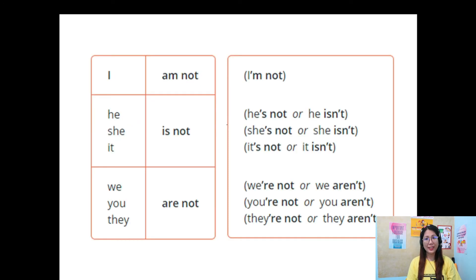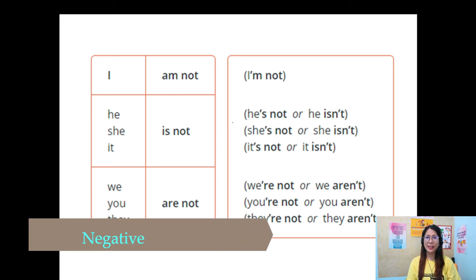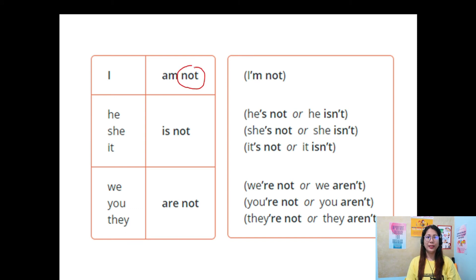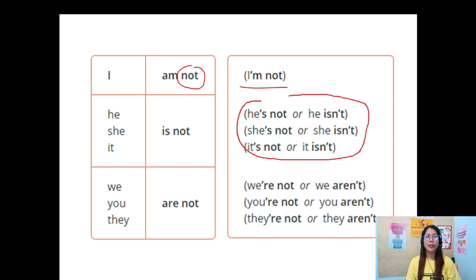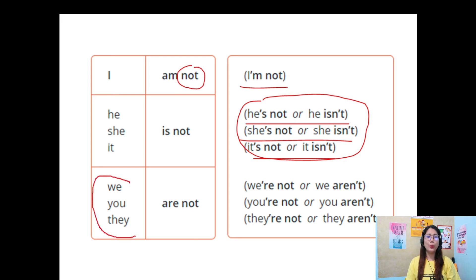Now let's proceed to negative sentences. Negative sentences use 'not.' I am not — short form: I'm not. He, she, it is not — two short form options: he's not or he isn't; she's not or she isn't; it's not or it isn't. You can choose whichever you're comfortable with. For plural pronouns — we, you, they are not: we're not or we aren't; you're not or you aren't; they're not or they aren't.